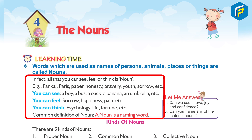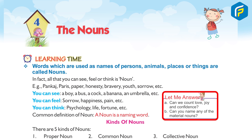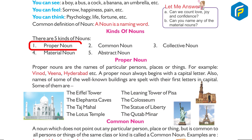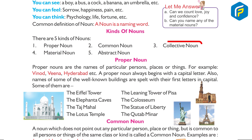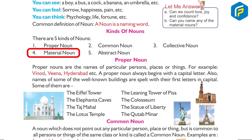Let me answer: (a) Can we count love, joy and confidence? (b) Can you name any of the materials noun? There are five kinds of noun: one, proper noun; two, common noun; three, collective noun; four, material noun; five, abstract noun.